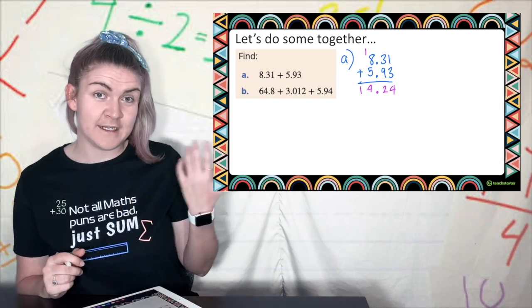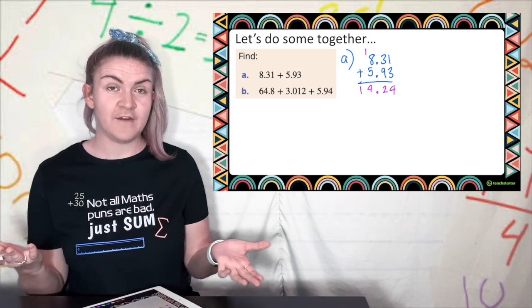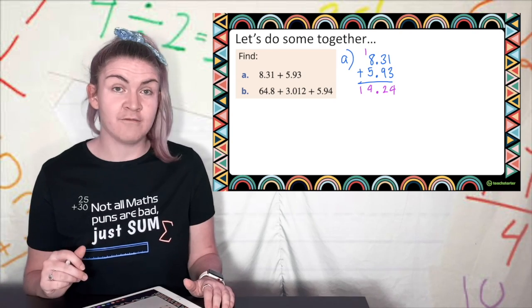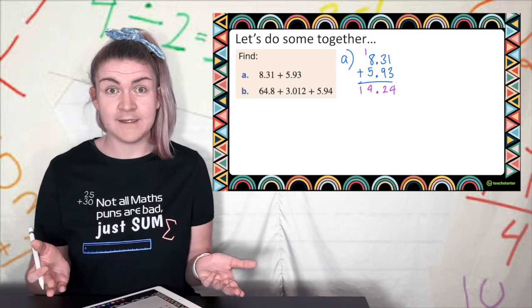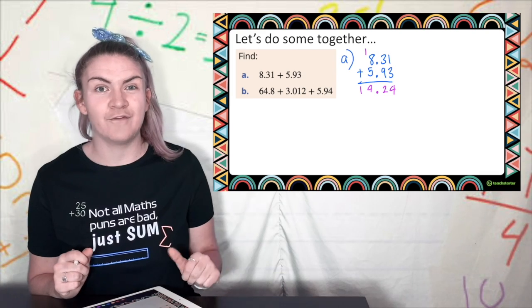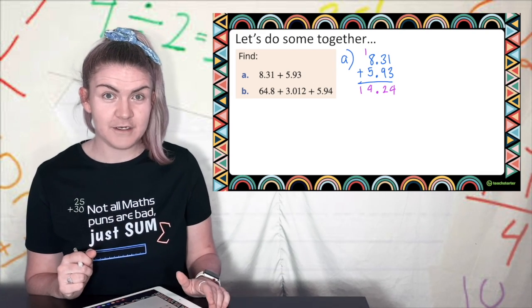Now as always I like to check is it reasonable. What is 8 plus 5? That's 13. This is just around the number 13. If my answer had been 142 then I would have known it was unreasonable but this seems pretty reasonable.